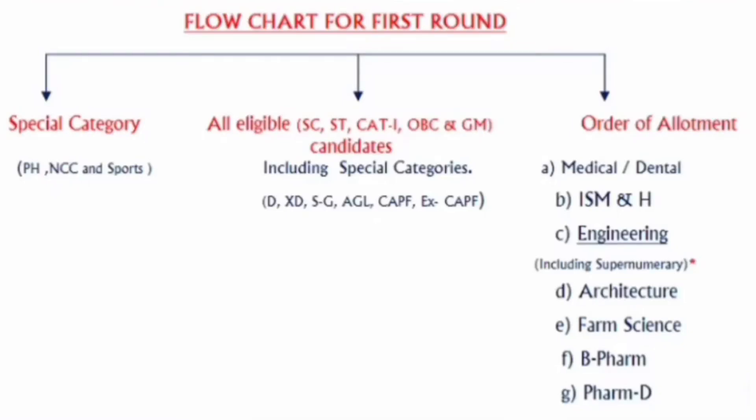In this video, I'm going to explain how the actual allotment for the first round will happen. This depends on many factors. Looking at this flowchart, the first component is special categories — physically handicapped, NCC cadets, and sports category students. The second is all eligible candidates, which includes SC, ST, Category 1, OBC, and general merit candidates. The third is the order of allotment depending on preference.